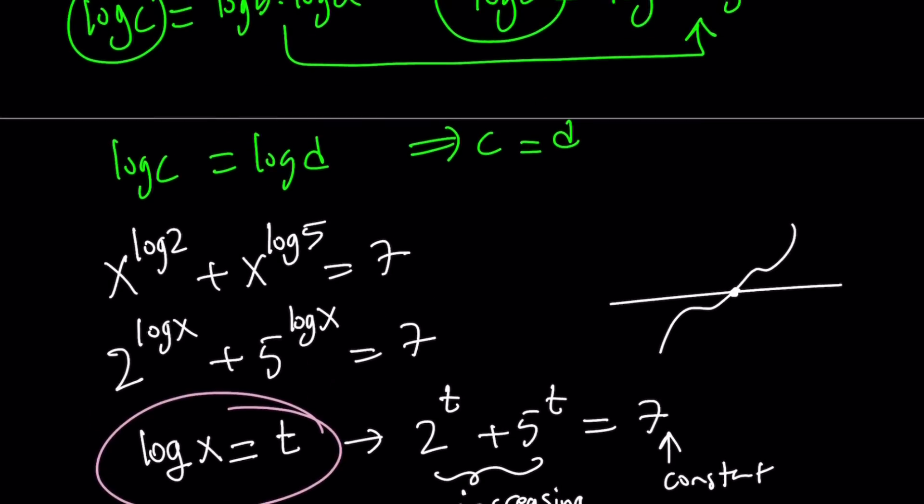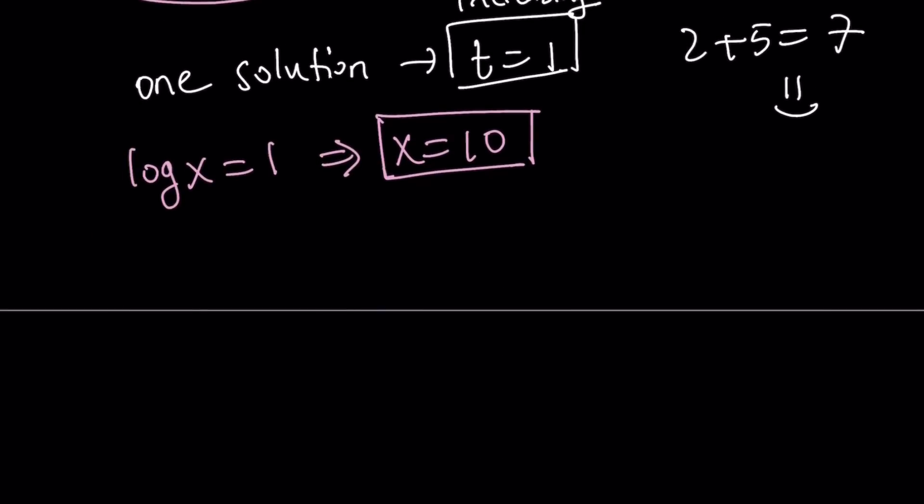So does that work, really? Well, if you plugged it into the original one, you're going to get 10 to the log 2 plus 10 to the log 5, and that should equal 7. But 10 to the log 2 is 2, by definition of logs or whatever property that you want to use. And 2 plus 5 gives you 7 actually. So this is true.